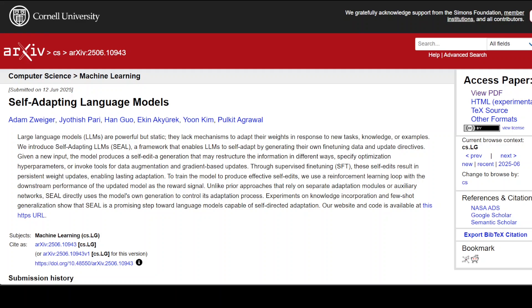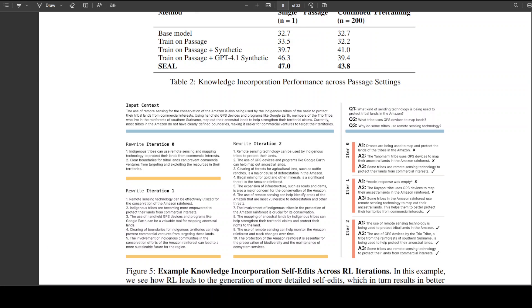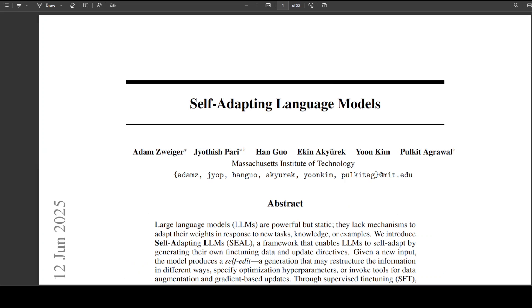These authors introduce something called SEAL or Self-Adapting LLMs. The core idea is quite brilliant - instead of humans deciding how to fine-tune a model, what if the model could generate its own training data and decide how to update itself?